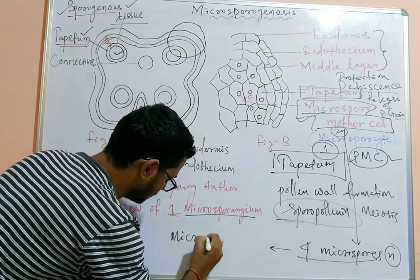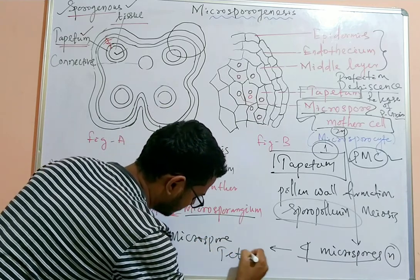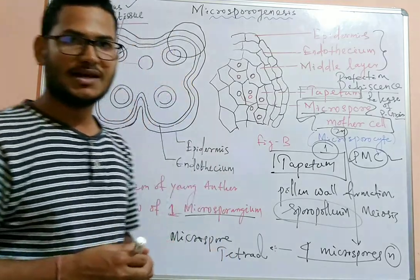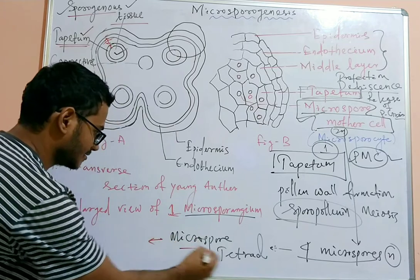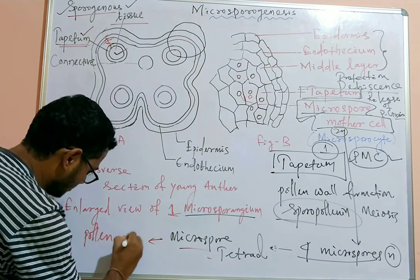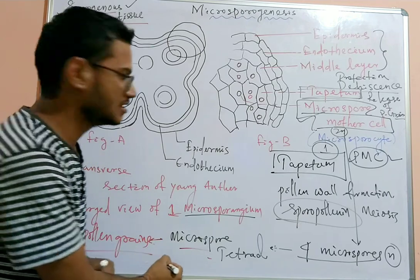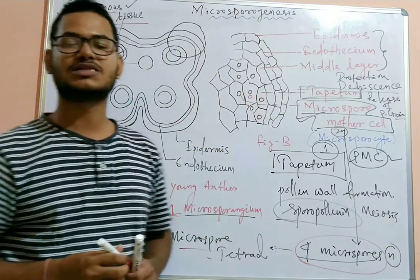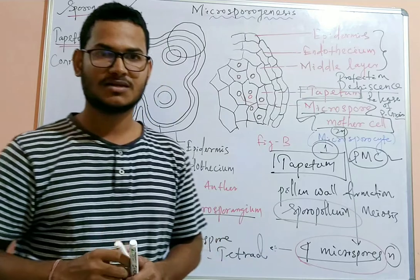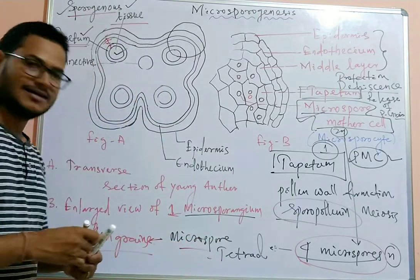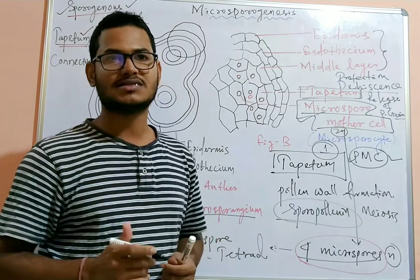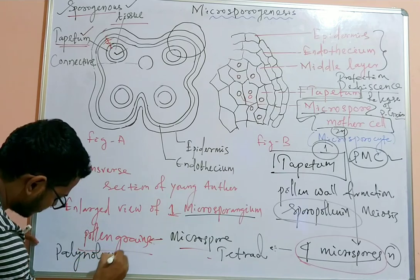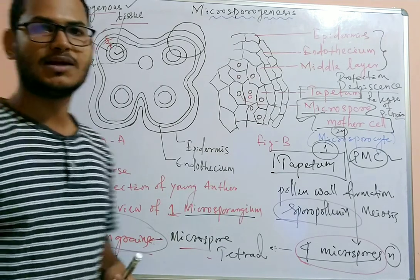The four haploid microspores are called a microspore tetrad because they are four in number. The microspore tetrad will develop into pollen grains. Pollen grains are produced from the microspore mother cell by meiotic division, forming a tetrad structure. The study of pollen grains is known as palynology.